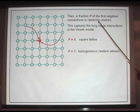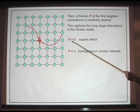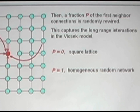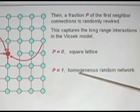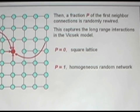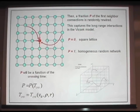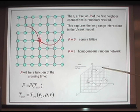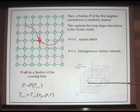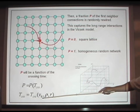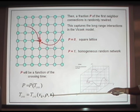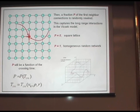Then we rewire randomly a fraction p of the connections in this lattice, and this is what generates a small world topology. p equals zero is the square lattice; p equals one is the homogeneous random network where all the connections can be rewired. The rewiring probability p should be a function of the average time it takes for two particles that are not interacting to eventually come within the same vicinity. This crossing time should be a function of the speed of the particles, the average density, and the radius of the interaction vicinity.